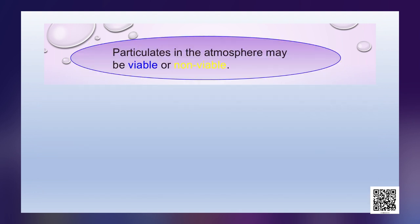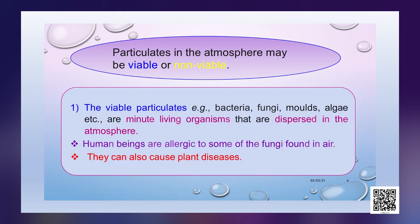Particulates in the atmosphere may be viable or non-viable. The viable particulates — for example, bacteria, fungi, molds, algae, etc. — are minute living organisms that are dispersed in the atmosphere.